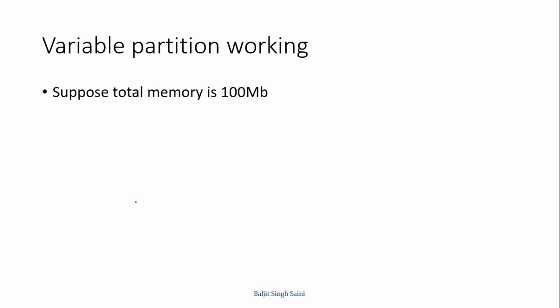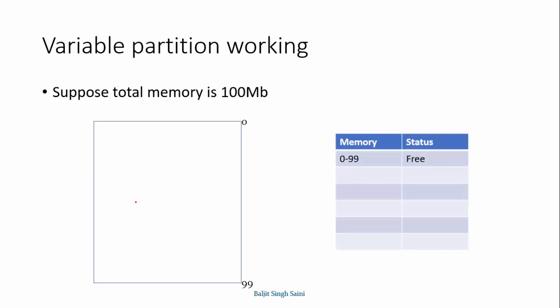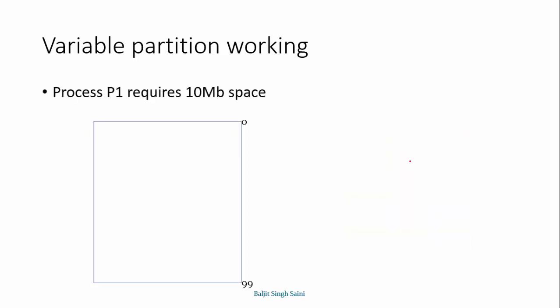In the very beginning, let's suppose I have total memory of 100 MB available. My RAM is 100 MB and all this space is free. This is considered to be one big hole. The memory table shows from 0 to 99, the entire space is free. Now process P1 arrives and requires 10 MB of space. The system will allocate 10 MB from this 100 MB to P1. We update the table: from 0 to 9 is with P1 process, and the rest is free.